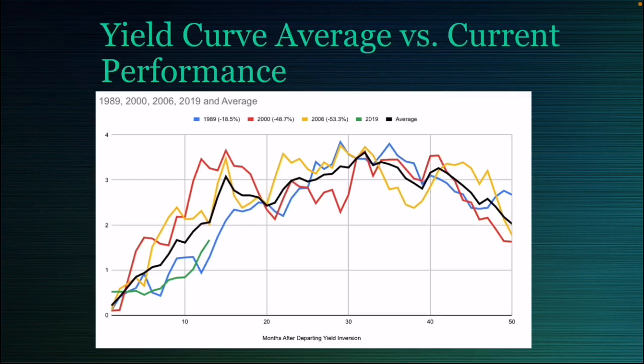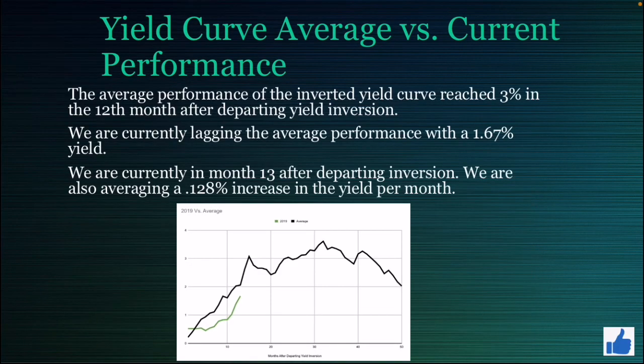In this chart, I add the average performance of the inverted yield curve — you can see that in the black line. The average performance reached 3% in the 12th month after departing yield curve inversion. We're currently lagging that a little bit; the performance is currently at 1.67. We're in month 13 after departing inversion, which is about an average of 0.128% increase in yield per month.